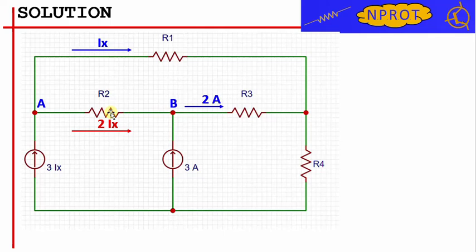We have two incoming currents, one of which is represented by the current 2 times Ix which circulates in the branch of R2 and a second equal to 3 amperes generated by the current generator. We then have a current outgoing from node B, equal to 2 amperes and circulating in the branch of resistor R3.